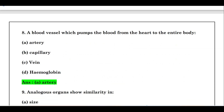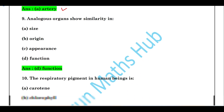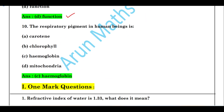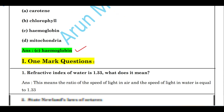A blood vessel which pumps blood from the heart to the entire body is the artery. Analogous organs show similarity in function. The respiratory pigment in human beings is hemoglobin.